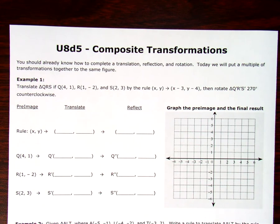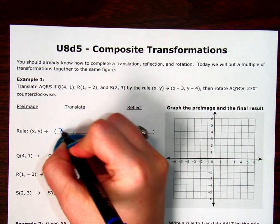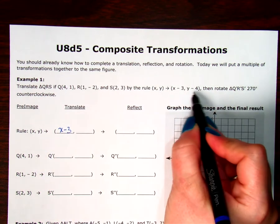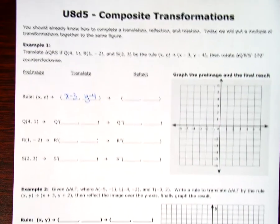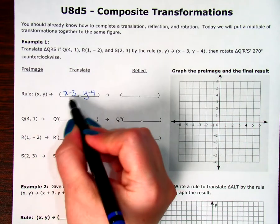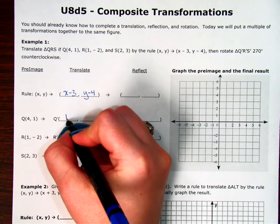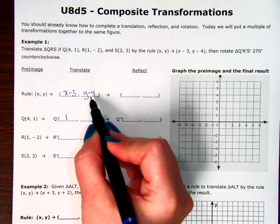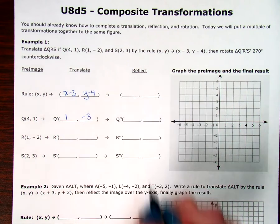Alright, so, our rules. The first thing we're going to do is we're going to translate, and they told me what I'm going to translate by. It tells me I'm going to translate by x minus 3, and y minus 4. So, that's the first thing I'm going to do. I'm going to take away 3 from my x value. 4 minus 3 is 1. And then, I'm going to take 4 away from the y value. 1 minus 4 is negative 3.